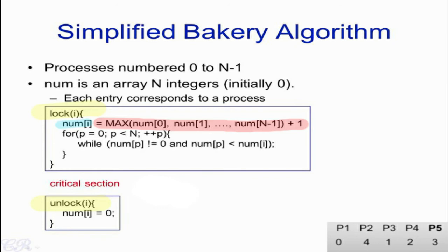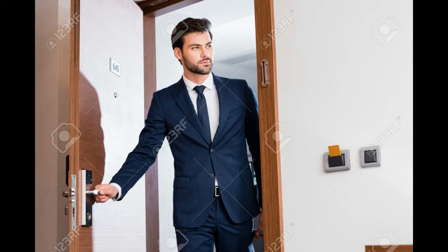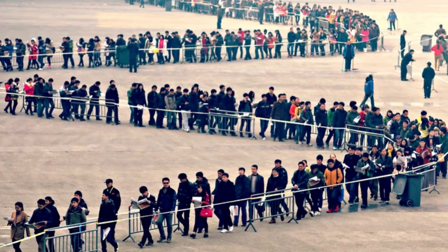We can think of this as a doorway into the bakery shop from the analogy, where customers come in and take their spot in line, or take their ticket number and wait in line. We can see P1, P2, P3, etc.—those numbers.